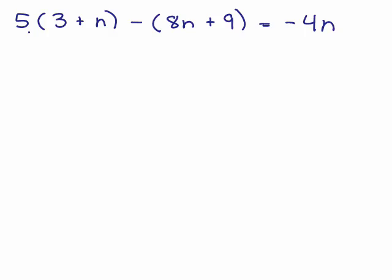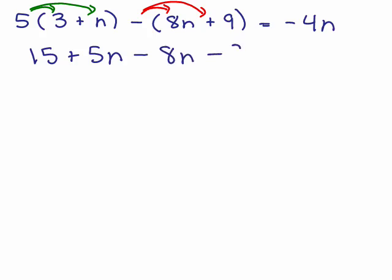You need to distribute the 5 to the 3 and the n, so that's going to be 15 plus 5n, because 5 times 3 and 5 times n. All right, and then what do we do with this minus sign? Remember you have to distribute your minus sign by changing signs of what's ever inside, so that's going to give you a minus 8n, and it's going to give you a minus 9. And on the right-hand side, we still have the negative 4n. All right, now we need to combine like terms.